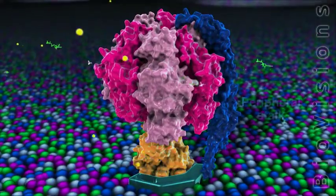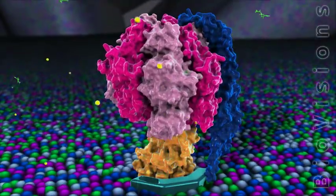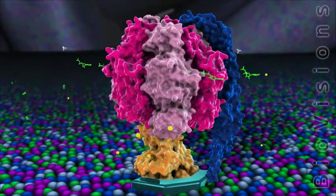The peripheral stalk extends from the membrane to the top of the F1 domain, and anchors the alpha and beta subunits so they do not rotate with the central stalk.